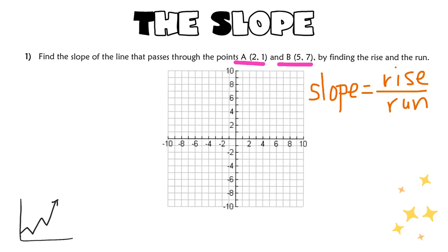As soon as I see two points, my first instinct is to go ahead and graph those points. So (2, 1) and (5, 7) — this goes back to the lesson on how to graph on a Cartesian grid. Then hopefully you have a ruler with you; you're going to take your ruler and connect those two points together. The rise between these two points is the difference in their height along the y-axis, and the run is the horizontal distance between the two points.